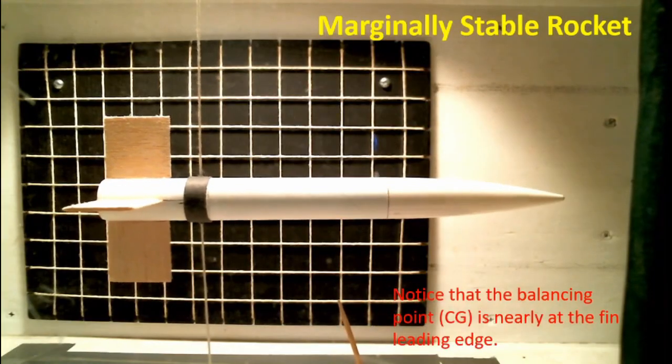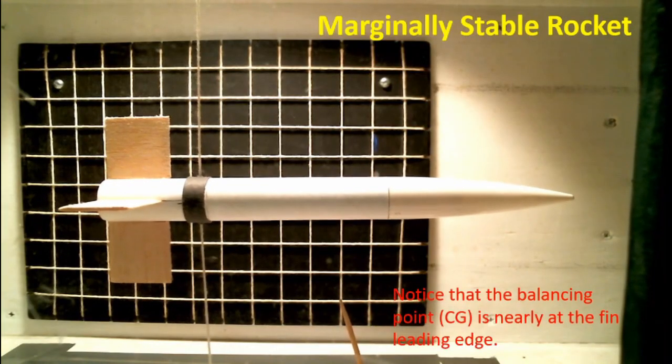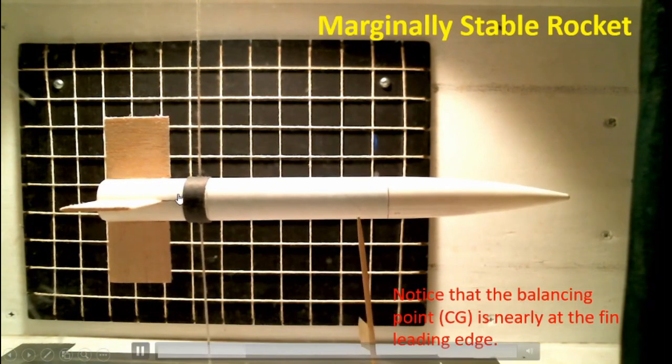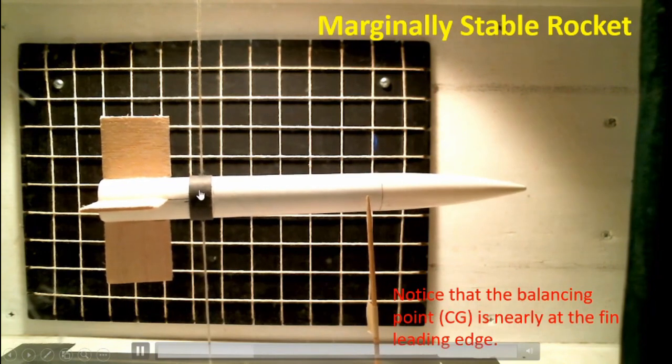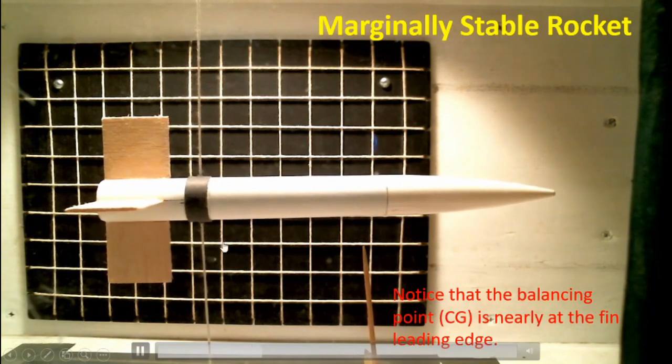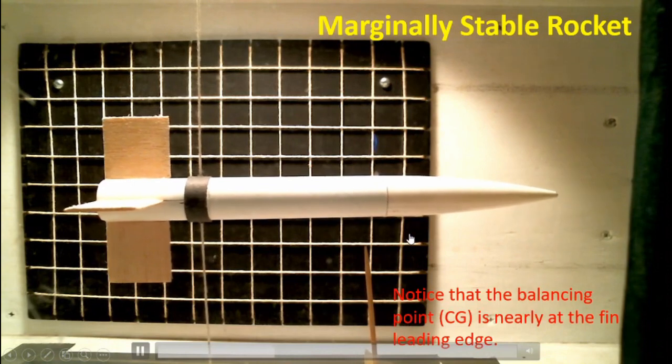Here's the third test with minimal stability—probably 0.1 to 0.2 calibers of stability. The center of pressure is back here somewhere and the center of gravity is just slightly in front of it. Notice how long the oscillations take to damp out.